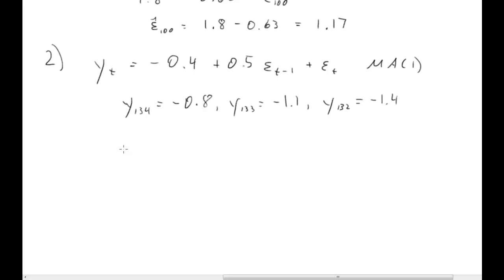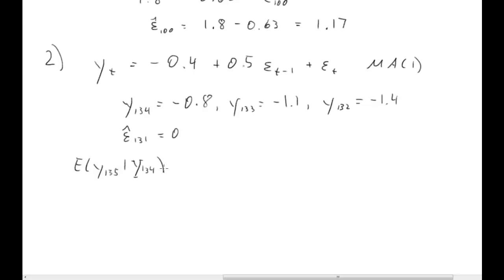There's additional information: a trusted colleague tells you that using this model, the observation at period 131 was predicted precisely, i.e., zero forecast error. So the error term at period 131 was equal to zero. The question is: calculate E[y(135)|I(134)], and then we also want the two-step ahead forecast.